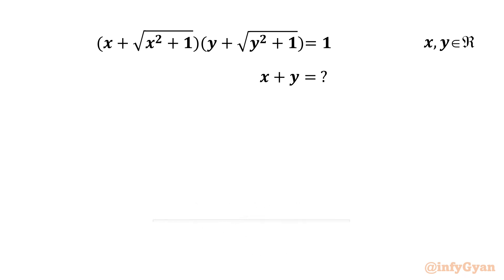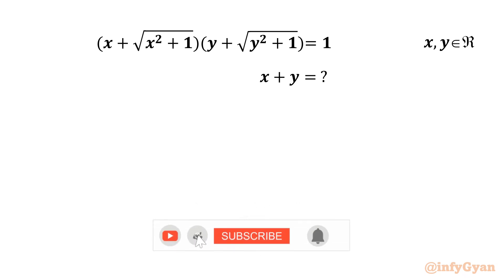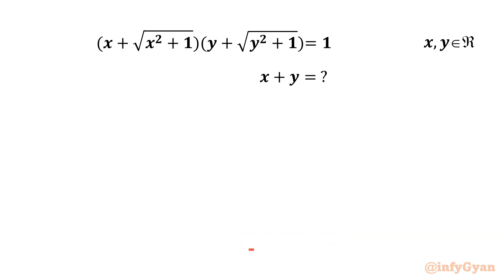Hello my dear friends, welcome back to Infigyan. Today in this video we are going to solve one very interesting question from algebra: x plus square root of (x squared plus 1) times y plus square root of (y squared plus 1) equals 1, where x and y belong to real numbers. We have to find the value of x plus y.